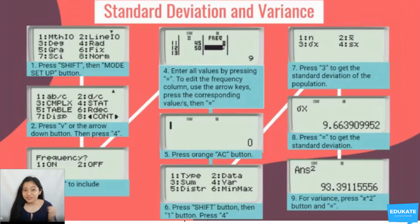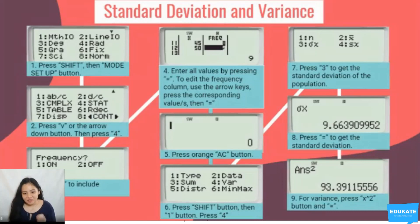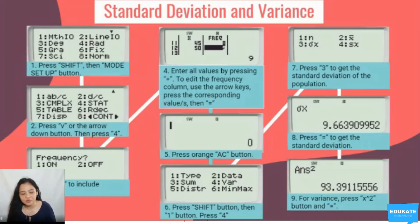A simple technique to compute standard deviation and variance is to use your scientific calculator. These shortcuts are applicable for a specific model of calculator — check the steps for your specific calculator model and apply the same pattern.